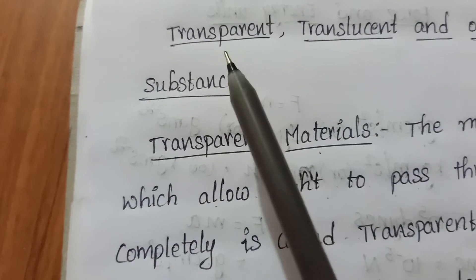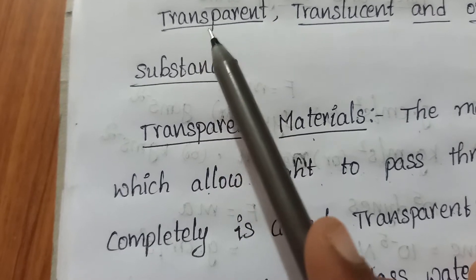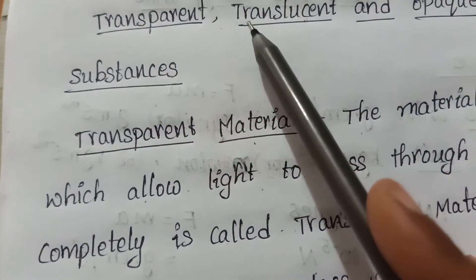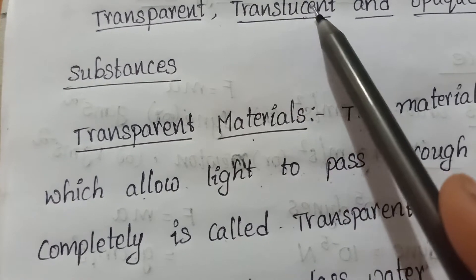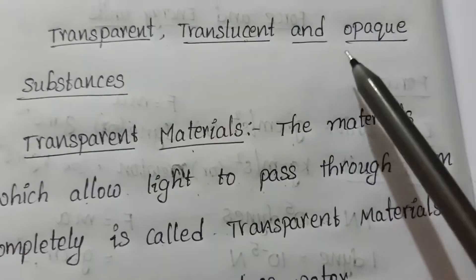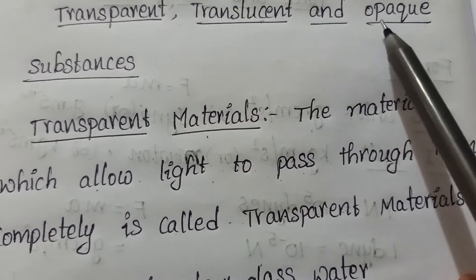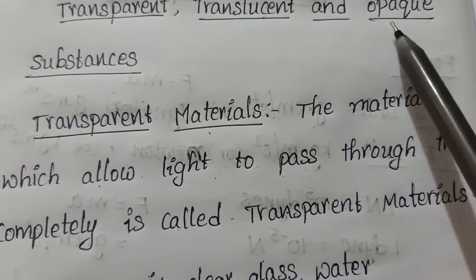See, this transparent spelling. T-R-A-N-S-P-A-R-E-N-T. Translucent T-R-A-N-S-L-U-C-E-N-T. Opaque O-P-A-Q-U-E. Spellings are very important. Learn them properly.